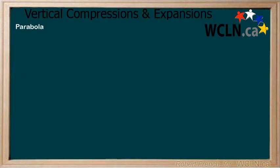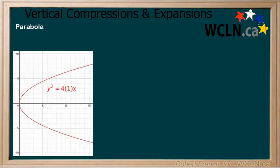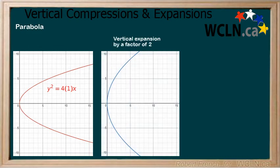Finally, we will look at a hyperbola. Here is both the equation and graph of a hyperbola. Now apply a vertical expansion by a factor of 2. To do this, we multiply y by 1 over 2, and we see how the graph of the hyperbola changes.